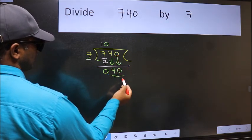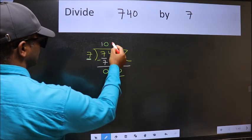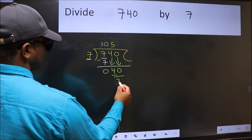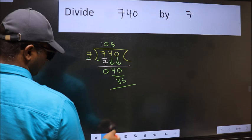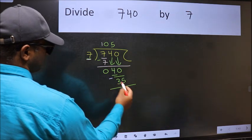Now 40. A number close to 40 in the 7 table is 7 fives, 35. Now we subtract and get 5.